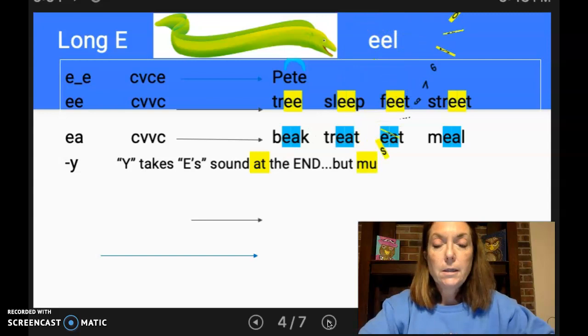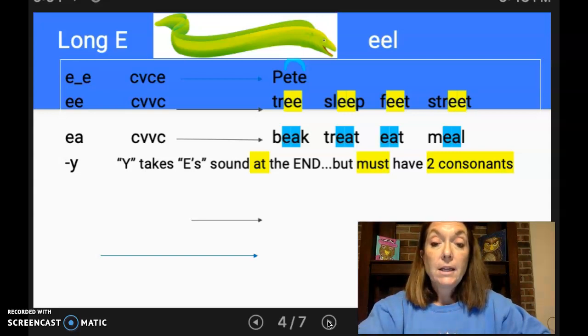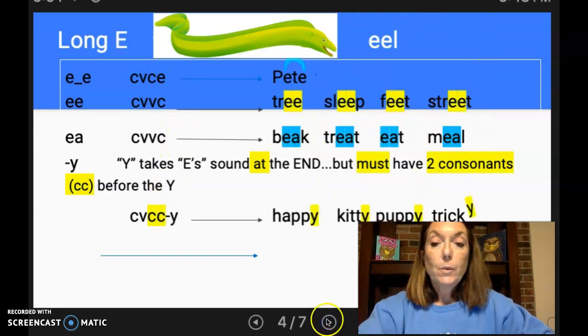Now this one's a little complicated. We have Y at the end of a word. Now Y doesn't always say E at the end of the word. So Y takes E sound at the end, but must have two consonants. There they are, two consonants before the Y. And those two consonants are the same consonant. So let's look at an example. So we have happy and there's where P is the same two consonant Y. Kitty, same consonant Y. Puppy, same consonant two times Y. Tricky, this one's tricky because it is not the same, but there's my two consonants between my vowel and the ending.